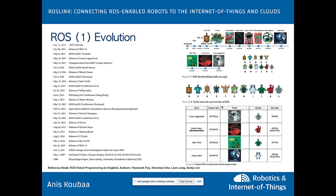ROS can be defined as a middleware that abstracts underlying hardware layers and their drivers, letting you focus on high-level applications for any kind of robot. ROS started from the Player Stage Project around 2000, was funded by Willow Garage in 2007, and the first version was released in 2010. The latest ROS 1 version is ROS Noetic, with several prior versions, each named after a turtle.